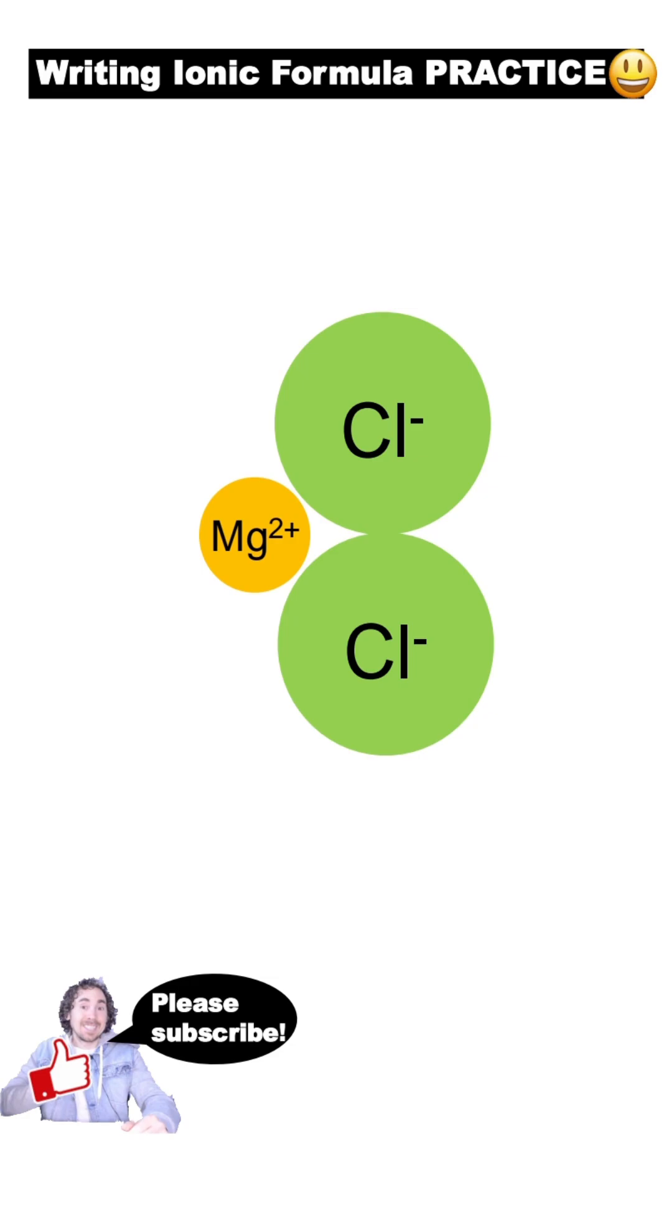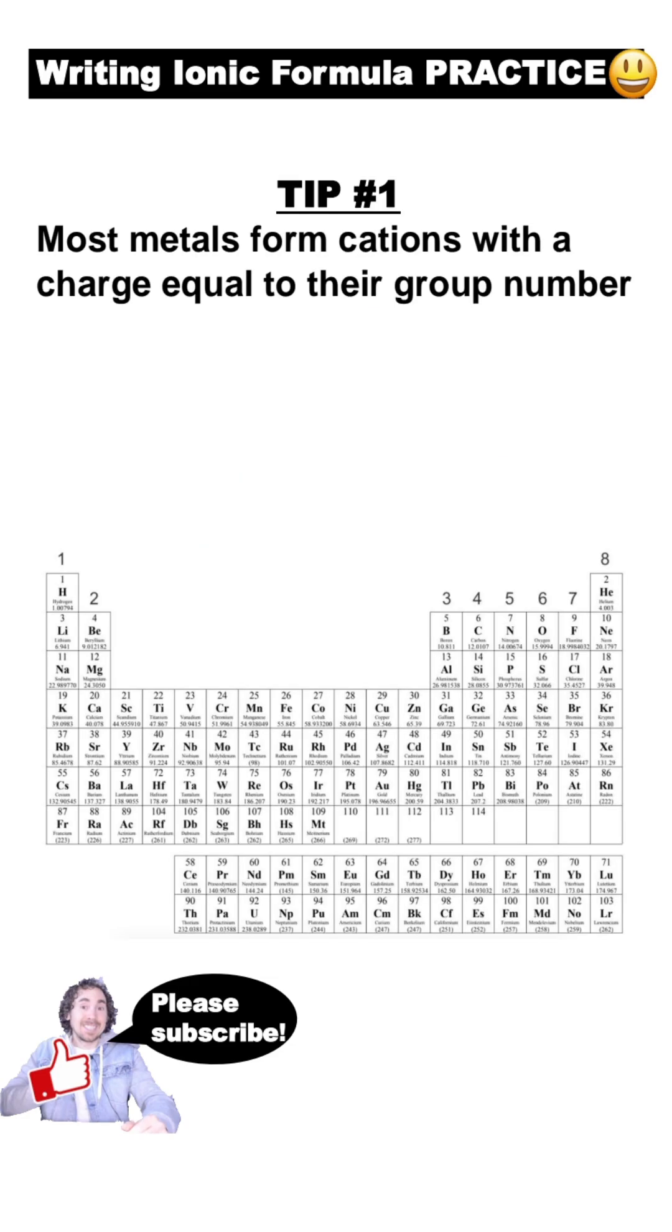It's first necessary to determine the charge of each ion, and here are some tips. When most metals form ions, the charge will be equal to their number of valence electrons, which you'll know from the group number on the periodic table.